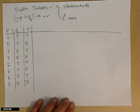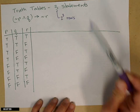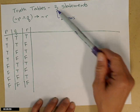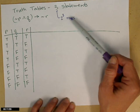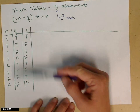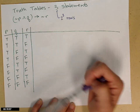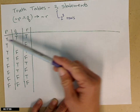Let's do an example of a truth table that has three statements. Since we have three statements, we'll have two to the third rows — so eight rows. Look how I have it set up: P, Q, and R. We're going to go in alphabetical order.